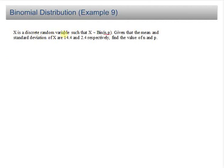X is a discrete random variable such that X follows a binomial distribution with parameters n and p. Given that the mean and the standard deviation of X are 14.4 and 2.4 respectively, find the value of n and p. So your mean equals 14.4 and your standard deviation equals 2.4.